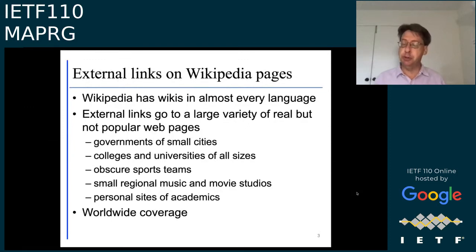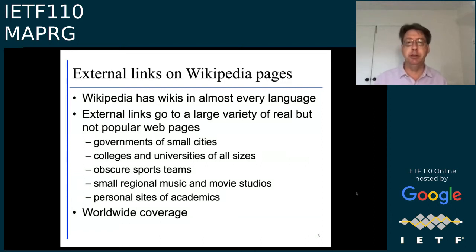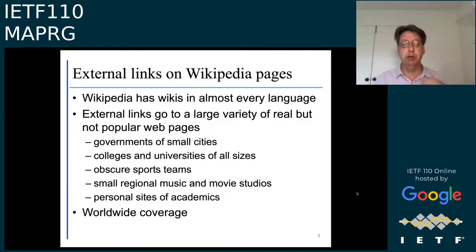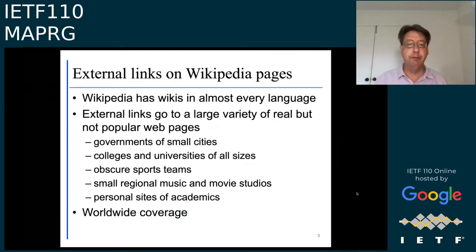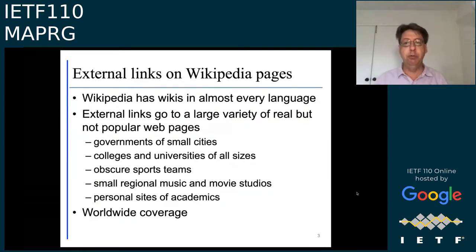I realized that Wikipedia has links to a huge number of small websites. If you're reading a Wikipedia page you'll see things like personal websites of academics, and lists of all the elementary schools in a particular town in a country you've never visited. Wikipedia is in pretty much every spoken language in the world. You get governments of small cities, obscure sports teams — these are much more typical than a list of the largest websites.